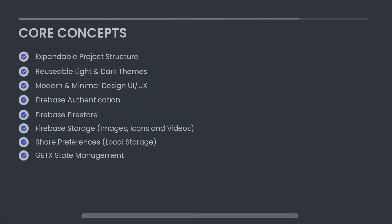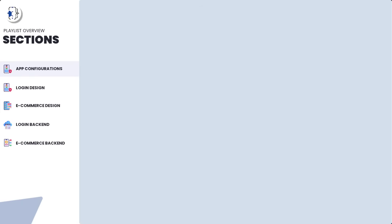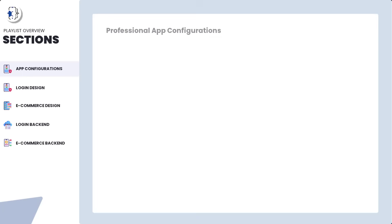The whole course is divided into five major sections. The first section is app configuration. The second is login design. The third is login backend. These first three sections are applicable for any type of application — not just e-commerce. The fourth section is e-commerce design and the fifth is e-commerce backend, which are specific to the e-commerce application. Let's talk about each section in detail, starting with app configuration.